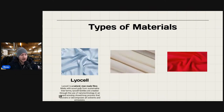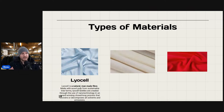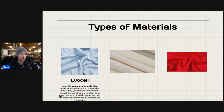Lyocell is a natural man-made fiber made of wood pulp from sustainable tree farms, created through nanotechnology in a closed-loop process that recovers all solvents and emissions. When you pick up a lyocell garment, you can tell it's different from cotton or polyester — it's very similar to linen, very lightweight, and might not be stretchy at all. You're going to see it a lot in women's tops and blouses.